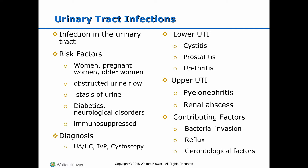UTI is categorized into upper and lower UTI. Lower UTI refers to infection in the bladder and structures below the bladder. Upper UTI refers to structures above the bladder, namely the ureters and the kidneys. Cystitis, prostatitis, and urethritis are lower UTIs, while acute and chronic pyelonephritis and renal abscesses are upper UTIs.